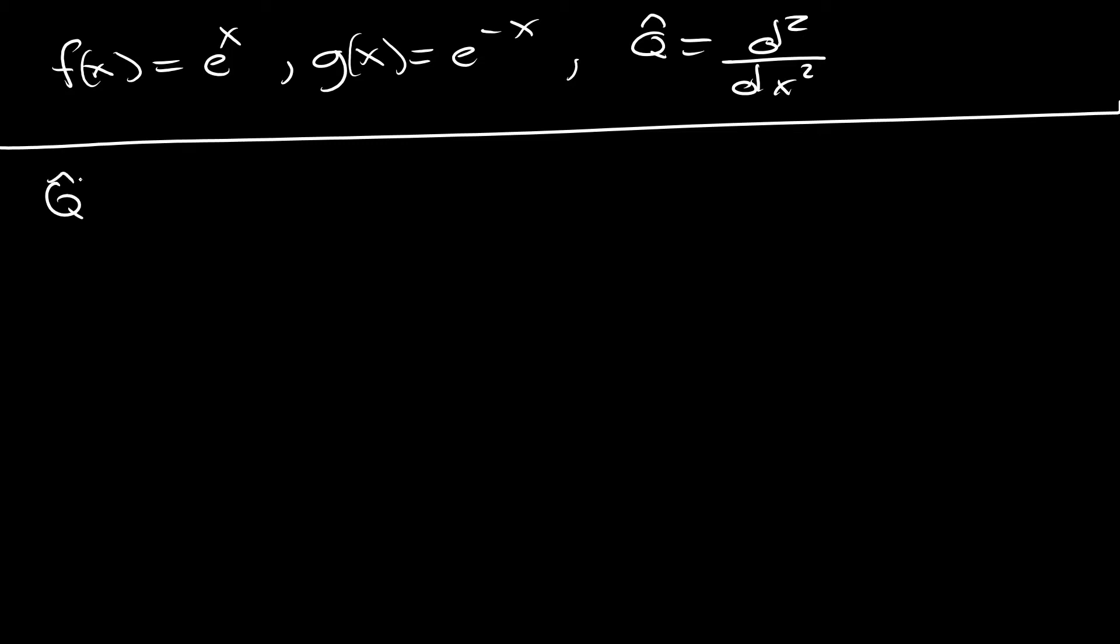So we're going to apply that q hat f is equal to q f. And so when we do that, we're going to be taking d squared dx squared of e to the x, which, of course, is just e to the x. And then we're going to do the same thing for our g eigenfunction. That should be a g, not an f, which is d squared dx squared e to the minus x. And again, what we're going to end up is just getting e to the minus x out because we're going to get a double negative upon the second derivative, which is just going to make this whole thing positive.